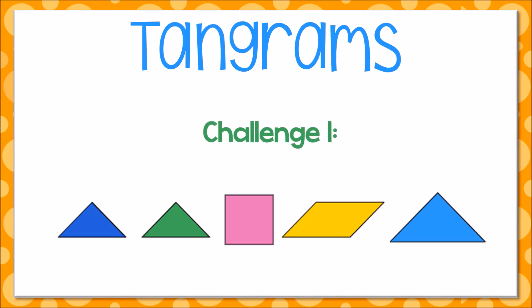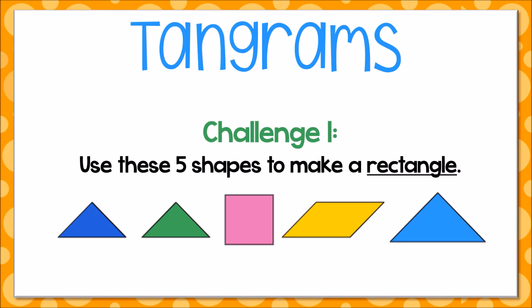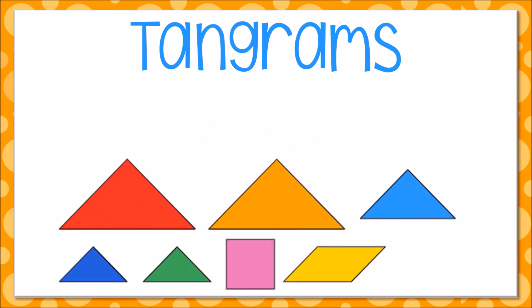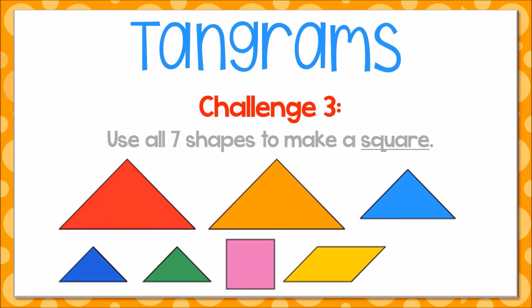Challenge number one asks you to use these five shapes to make a rectangle. Number two asks you to use these five shapes to make a square. Challenge number three asks you to use all seven shapes to make a square.